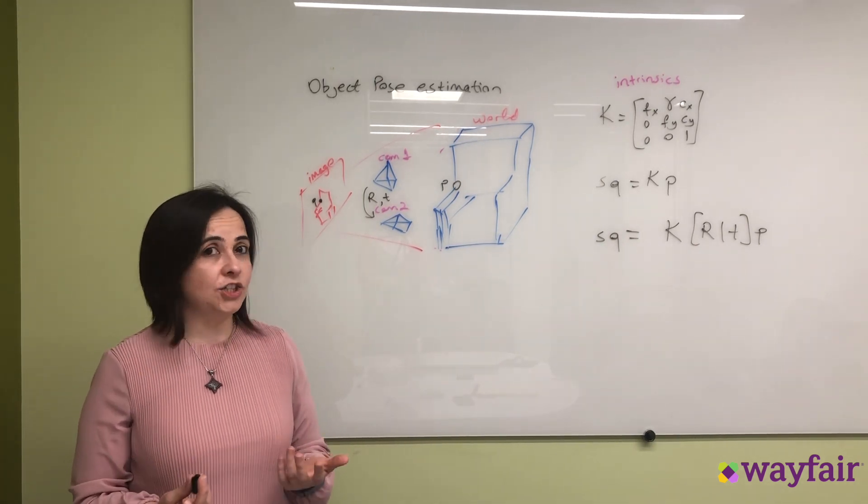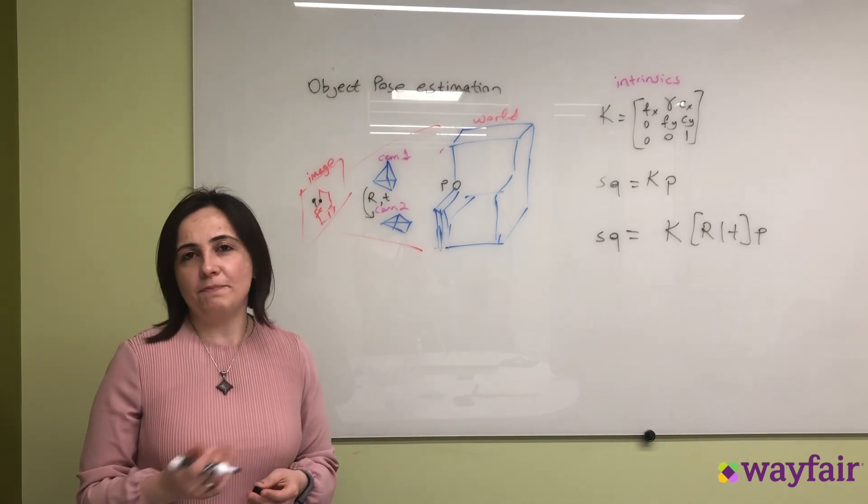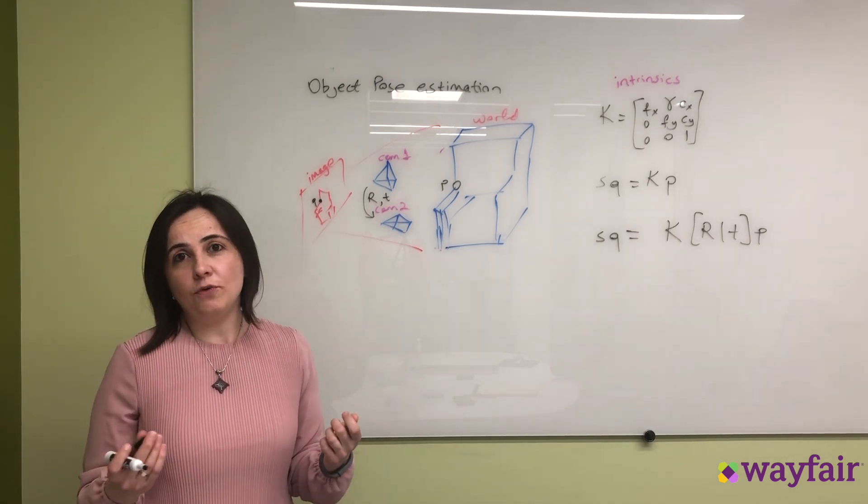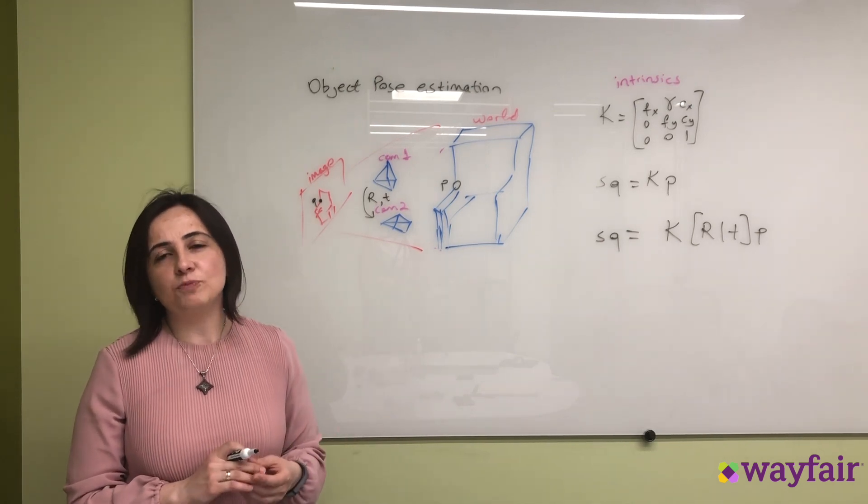Once you have this accurate rotation and translation estimation, you can lead your robot to pick up that object or take your phone so that you can view the item that you picked in your room in a much better way.